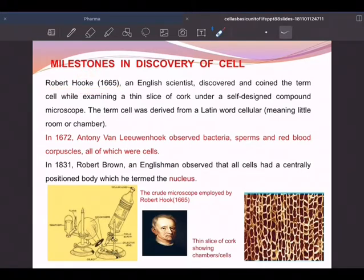This was discovered by Robert Hooke, an English scientist who discovered and coined the term cell while examining a thin slice of cork under a self-designed compound microscope.